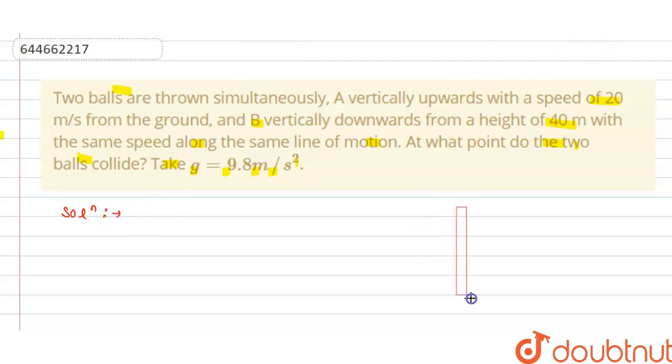This is our height, 40 meters here. We have thrown ball A vertically upward with the speed of 20 meters per second, and we have ball B from the height of the tower at 20 meters per second.